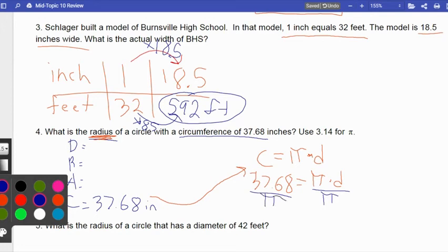So I need to get rid of that pi that's being multiplied. Opposite multiplies divide. So I'm going to type into my calculator, 37.68 divided by 3.14, and I get 12. Okay. So I'll draw a little arrow over here. Here, I get D equals 12, 12 inches.